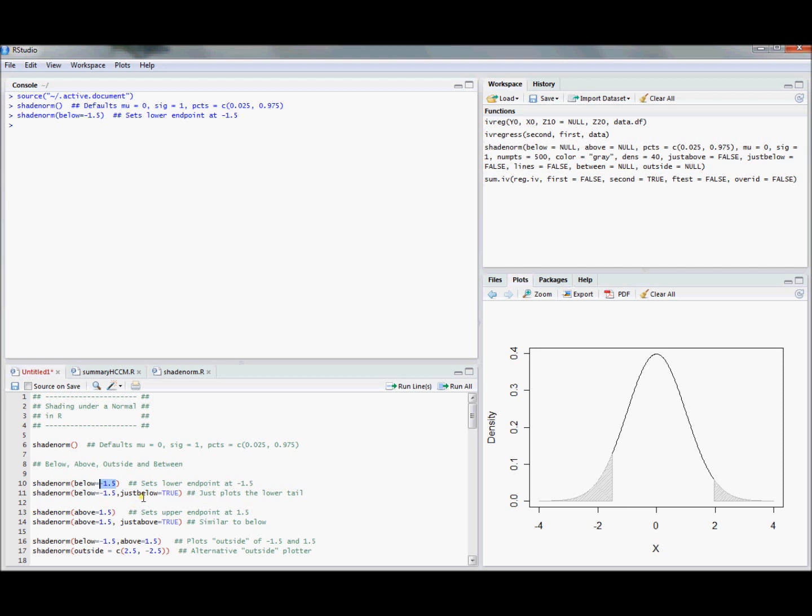Maybe that's not what you wanted to do. Maybe what you wanted to do was just shade below. I've got another argument to this function called just below. It's a logical argument. If you say just below equals true, its default is false, but if you set just below equal to true and you run this, it will only shade the below region.